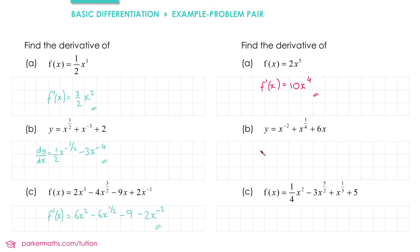In part b we're finding dy/dx. For the first term, multiplying by the power gives us minus 2 at the front, and subtracting 1 from the power gives x to the negative 3. For the next term, multiplying by the power gives plus 1 quarter, and subtracting 1 from a quarter gets us to negative 3 quarters. Then we differentiate 6x, which just gives us 6.